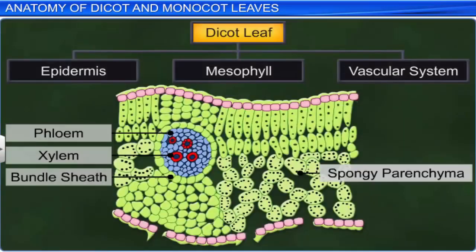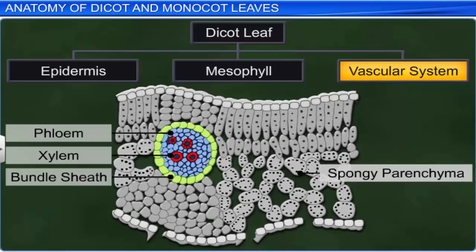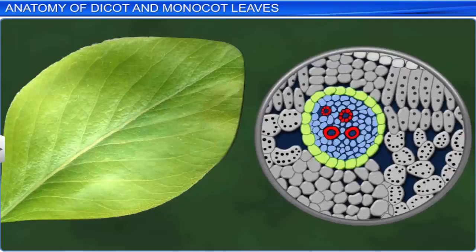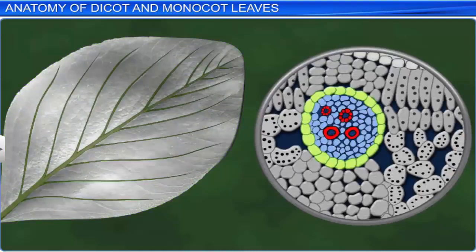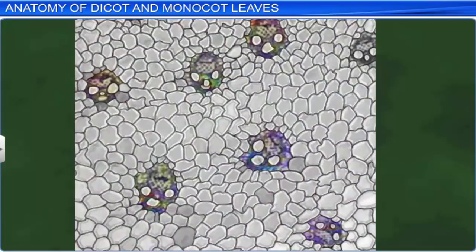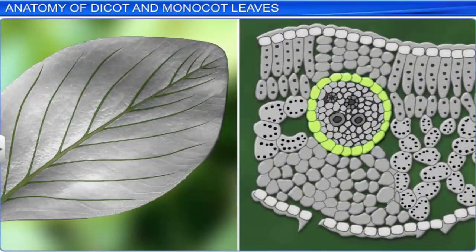The third part of a dicot leaf is the vascular system, comprising vascular bundles. When observed under a microscope, vascular bundles can be seen in the veins and the midrib of the leaf. The size of the vascular bundles depends on the size of the vein. In dicot plants, the leaves have reticulate venation in which the veins are of different sizes. Therefore, the vascular bundles are found irregularly scattered in the mesophyll. In the large veins, vascular bundles are usually surrounded by a bundle sheath.